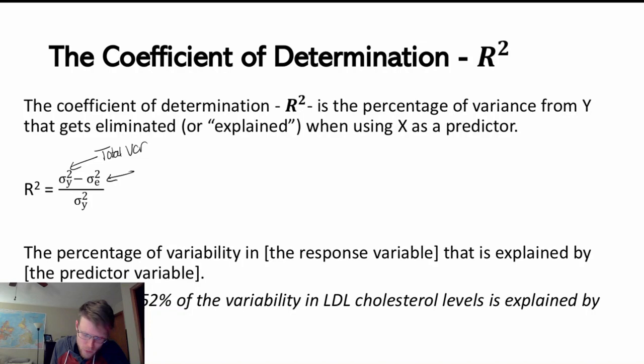This is going to be the remaining variance, the variance of our remaining error, of our remaining residuals. And then we're going to divide it again by the total variance.